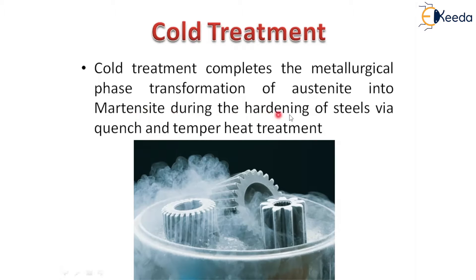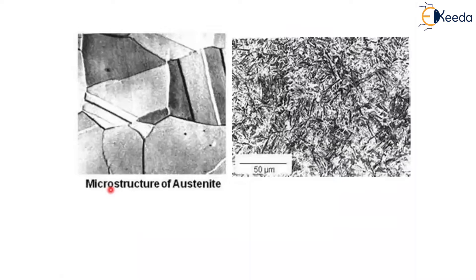Austenite transforms into martensite during hardening of steel via quenching or tempering heat treatment. The cooling procedure — whether tempering or quenching — is considered the sub-zero heat treatment process when it goes below zero degrees centigrade. The austenitic microstructure and the martensitic microstructure are very different — the martensitic structure is very distorted, like a pile of straws. If you cool rapidly, the austenite changes to martensitic structure.